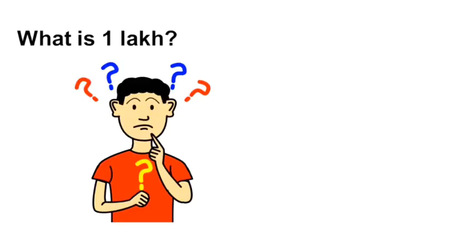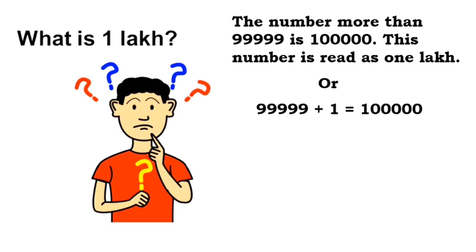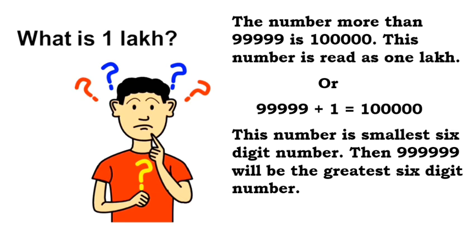Then what is 1 lakh? The number more than 99999 is 1 followed by 5 zeros. This number is read as 1 lakh, or we can say that 99999 plus 1 equals 1 lakh. This number is the smallest 6 digit number.